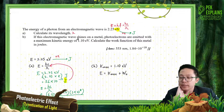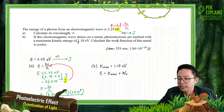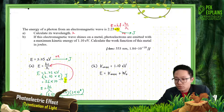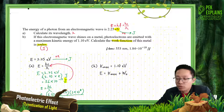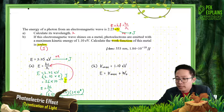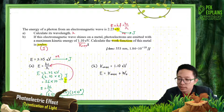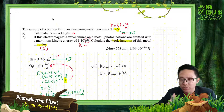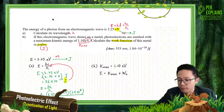If the electromagnetic wave shines on a metal, photoelectrons are emitted with a maximum kinetic energy of 1.10 electron volt. Calculate the work function of this metal in joules. The question wants the work function in joules, so make sure the unit is in joules, not electron volt. The 1.10 electron volt is the Kmax — the maximum kinetic energy.